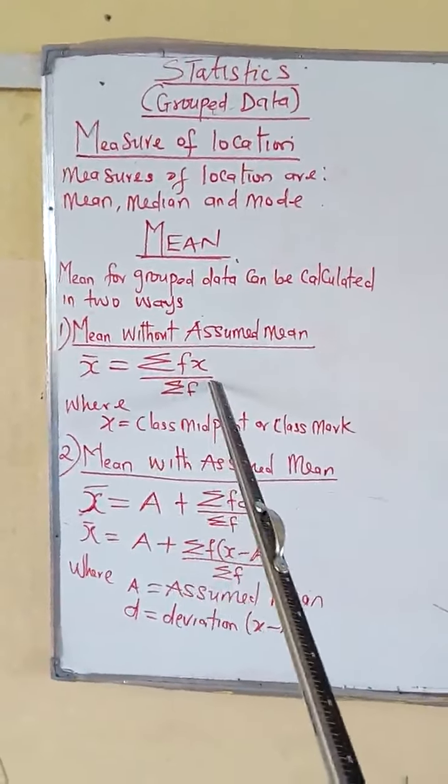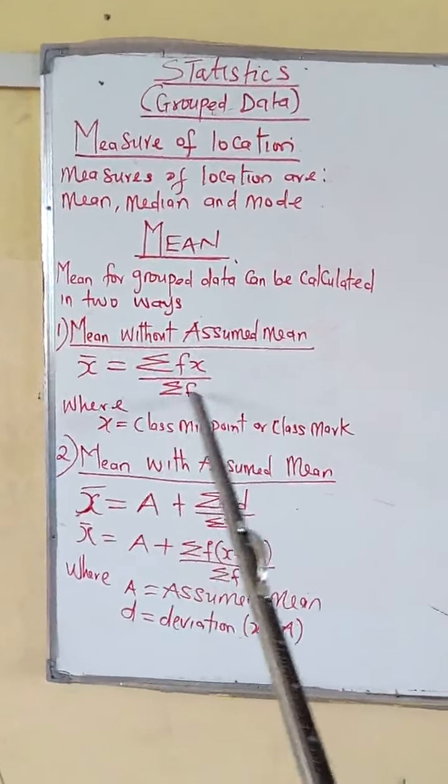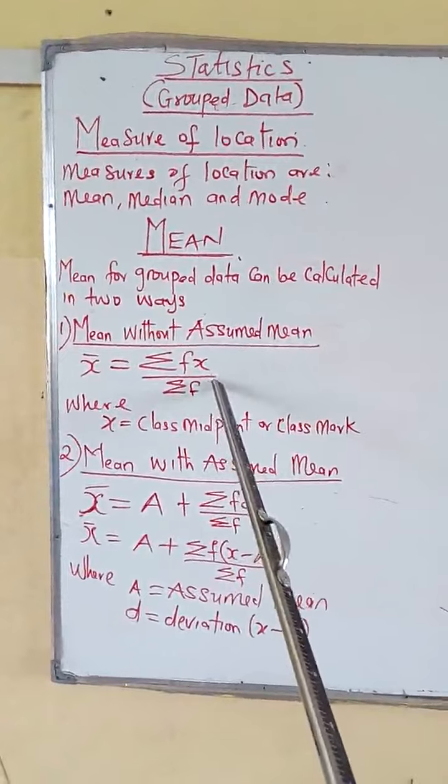You already know this formula. We have used it during the time of ungrouped data. So can we go to mean with assumed mean? This is the formula for it.